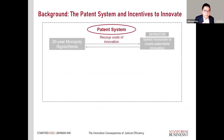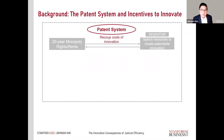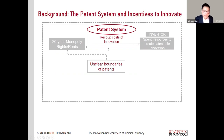To motivate the question, let me provide some background on the patent system, at least in the United States. The idea is that an inventor who produces innovations spends resources, time, and money to produce valuable, patentable innovation. One of the reasons inventors do this is the guarantee of being able to extract monopoly rights and rents once innovations are patented, so that the patent system is able to recoup some of the costs these inventors have incurred.